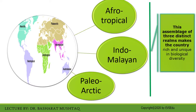Biogeographically, India is situated at the tri-junction of three realms — the Afro-Tropical, Indo-Malayan, and Paleo-Arctic — and therefore has characteristic elements from each of them. This assemblage of the three distinct realms makes the country rich and unique in biological diversity.